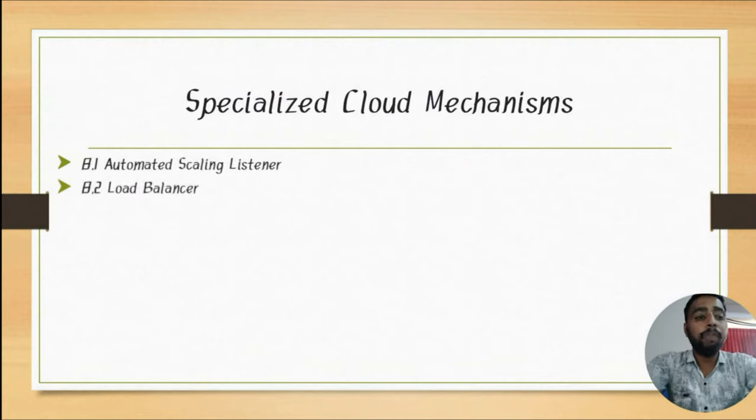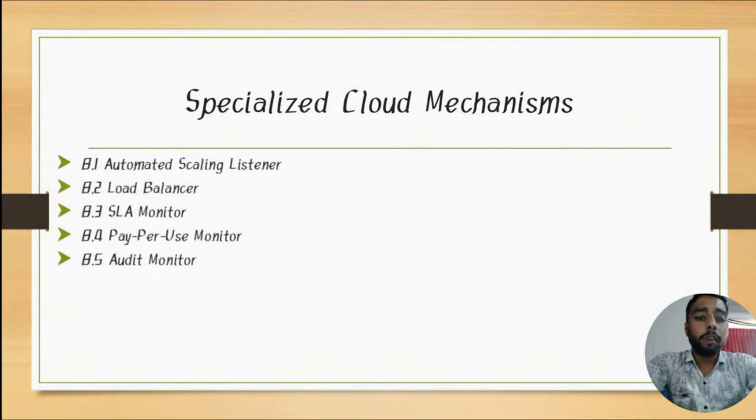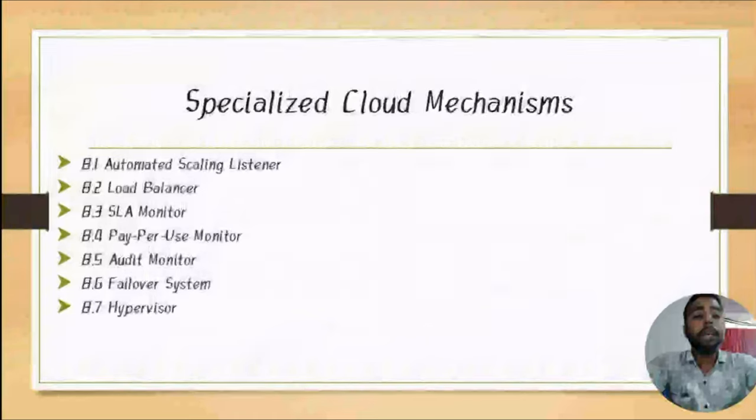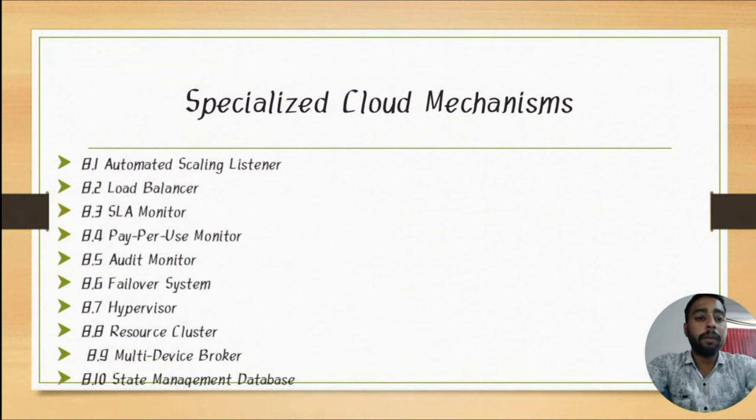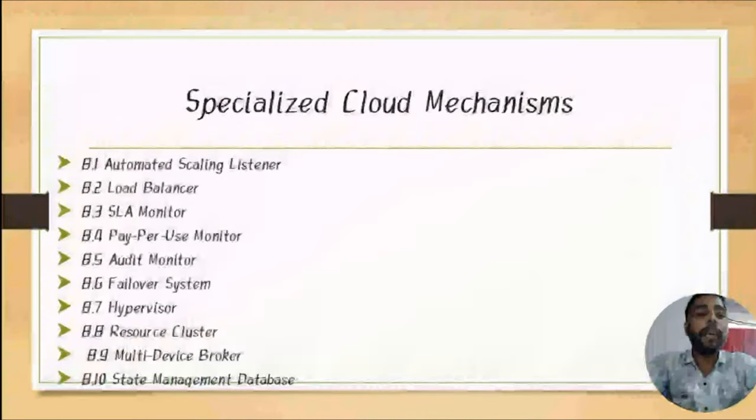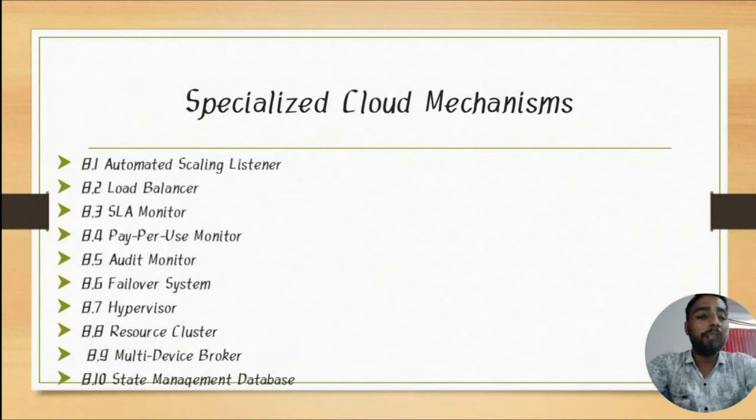First, we will check the list: Load Balancer, SLA Monitor, Pay Per Use Monitor, Audit Monitor, Failover System, Hypervisor, Resource Clusters, Multi-Device Blocker, and State Management Database. There are 10 different types of Specialized Mechanisms. So, the second mechanism is Load Balancer.